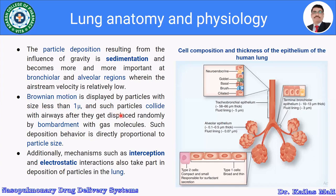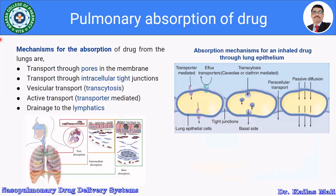Now let us see how the drug is going to be absorbed from the pulmonary route. There are five mechanisms by which the drug is absorbed into the systemic circulation. Looking at the figure of the lung epithelial cell, the mechanisms are: transporter-mediated absorption, efflux transporter, transcytosis, paracellular transport, and passive diffusion.